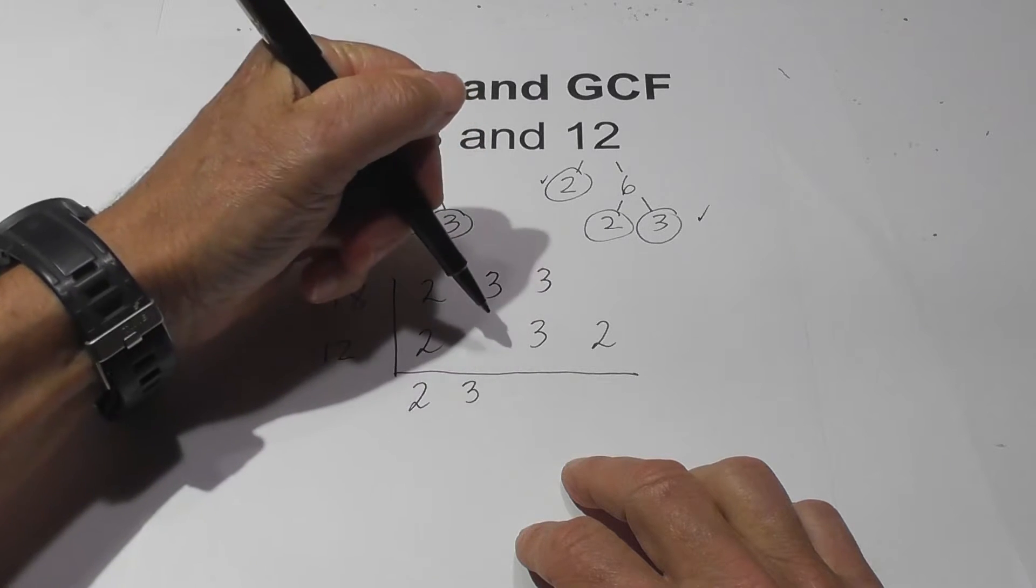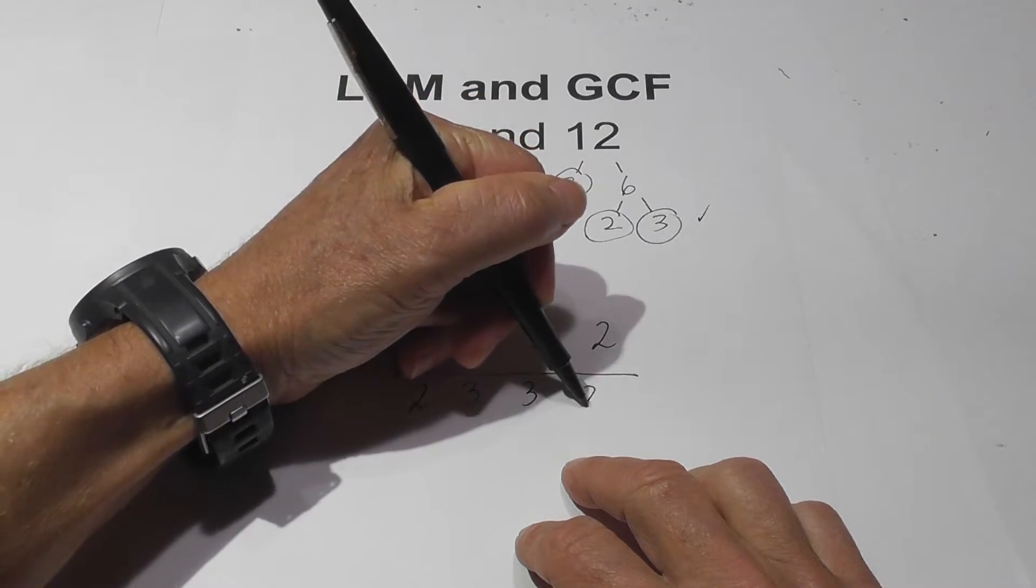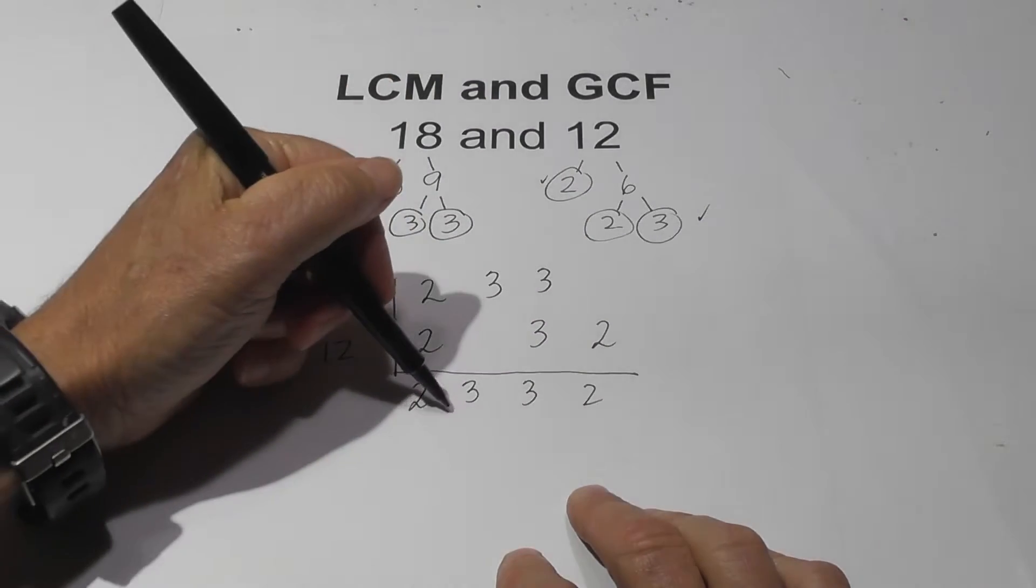So there's a 2 and a 3. I only bring down one 3 here and a 2. Now all you do is multiply this together.